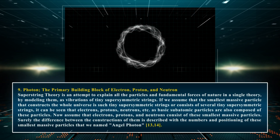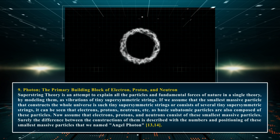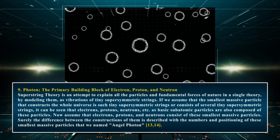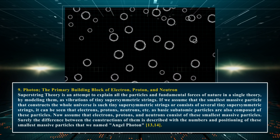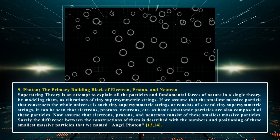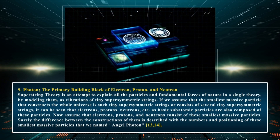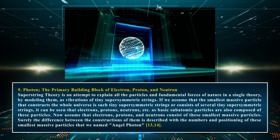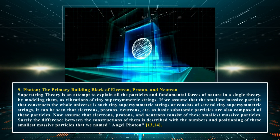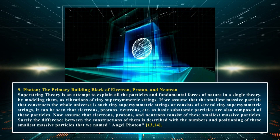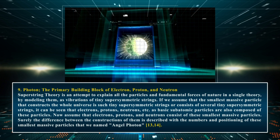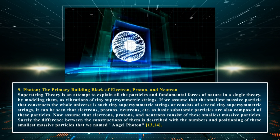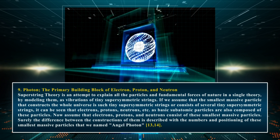Photon, the primary building block of electron, proton, and neutron. Superstring theory is an attempt to explain all the particles and fundamental forces of nature in a single theory by modeling them as vibrations of tiny supersymmetric strings. If we assume that the smallest massive particle that constructs the whole universe is such tiny supersymmetric strings, or consists of several tiny supersymmetric strings, it can be seen that electrons, protons, neutrons, etc. as basic subatomic particles are also composed of these particles. Assume that electrons, protons, and neutrons consist of these smallest massive particles — the difference between their constructions is described by the numbers and positioning of these smallest massive particles, which we named angel photons.